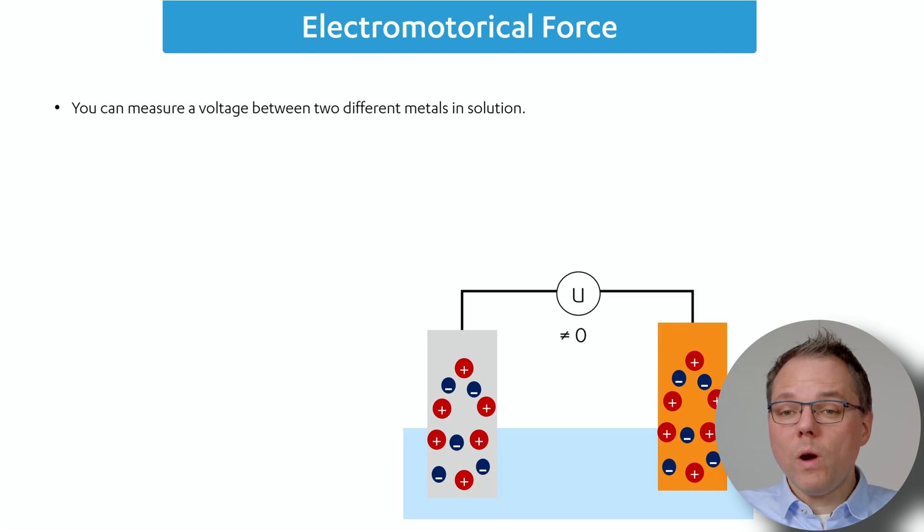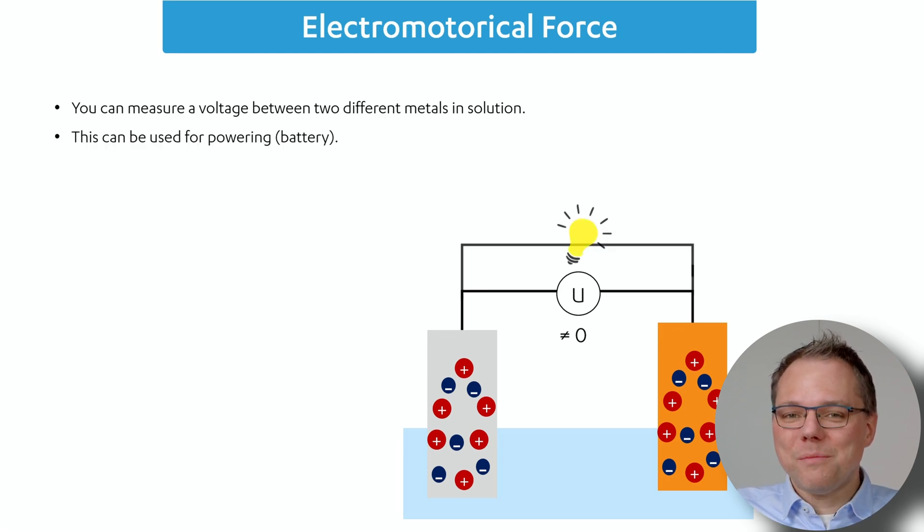And what can we do with that? Well, for example, you could already run a light or something else with this, because you can use that potential difference for powering other devices, because it's basically a battery. You connect the two metals and electrons will start flowing from the metal that has more negative charge to the metal that has less negative charge. It goes from the more negative potential to the more positive potential.